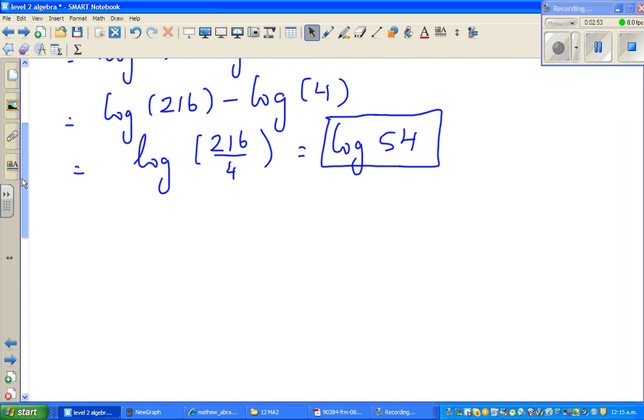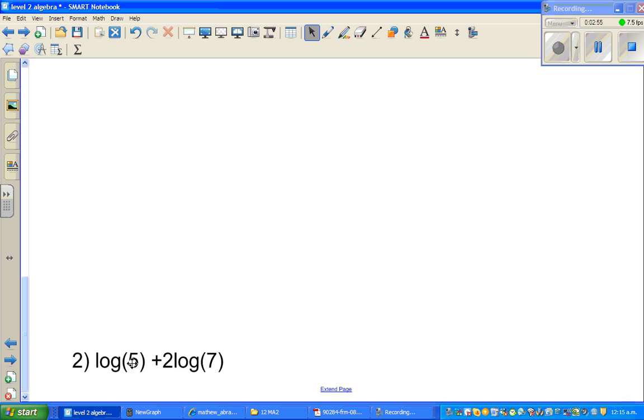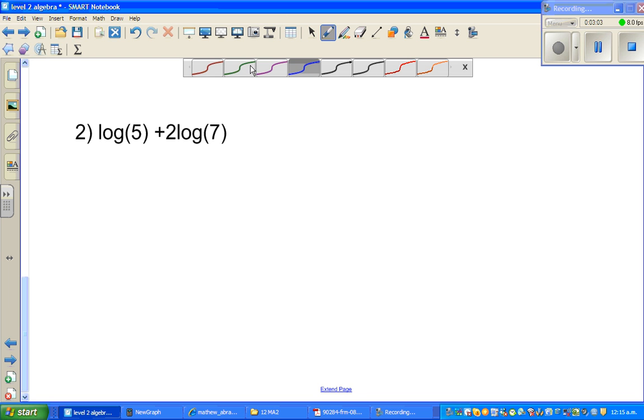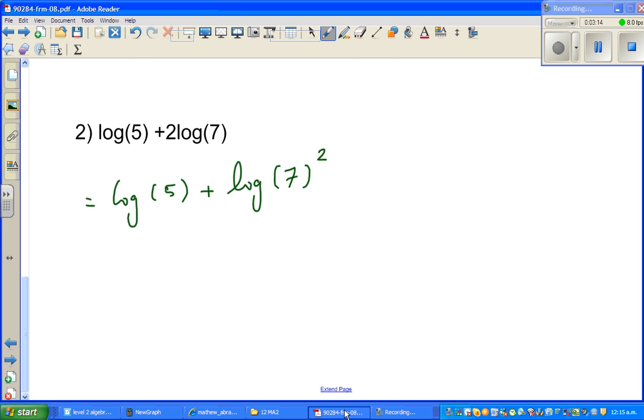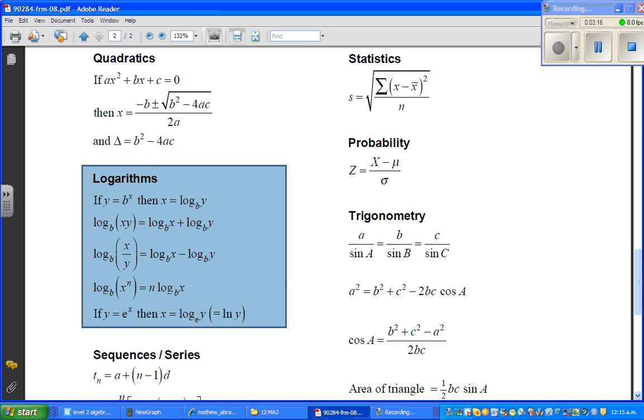So, let us look at the next question. The next question is log of 5 plus 2 log 7. So this is same as log 5 plus log of 7 squared. Again, I will show you the formula. This formula is this formula looking backwards. So, n log x is log of x to the power n.